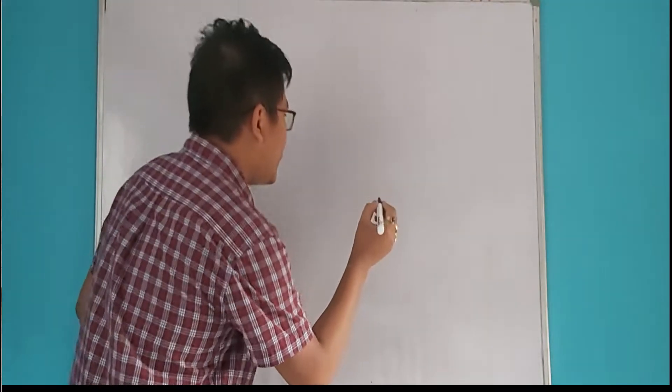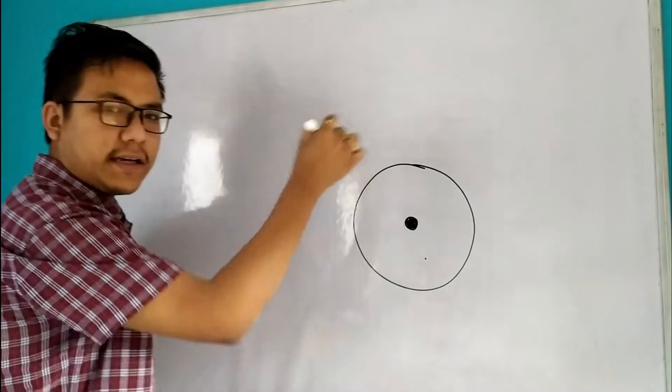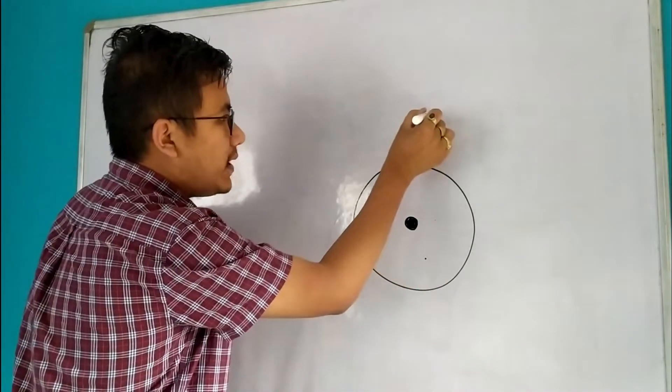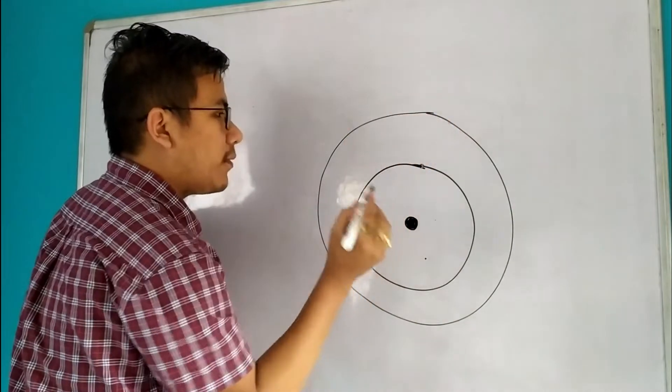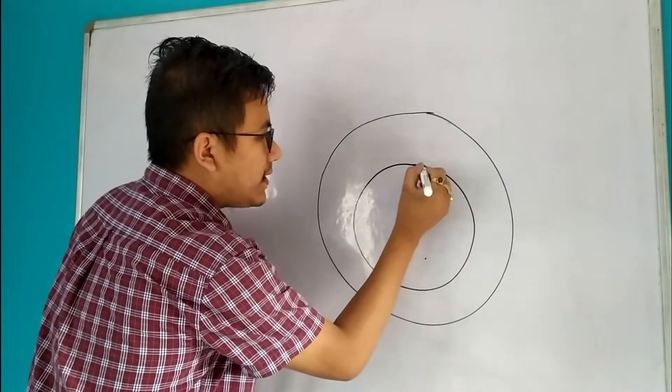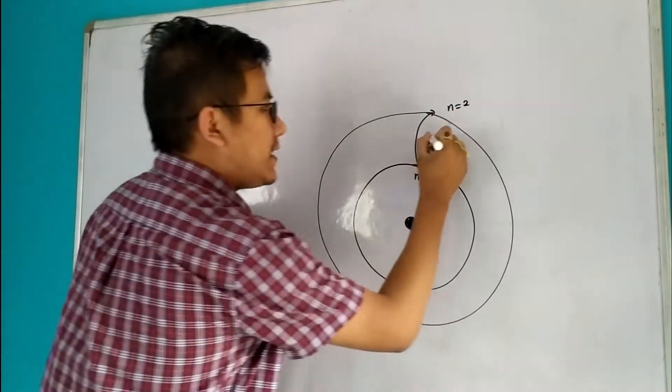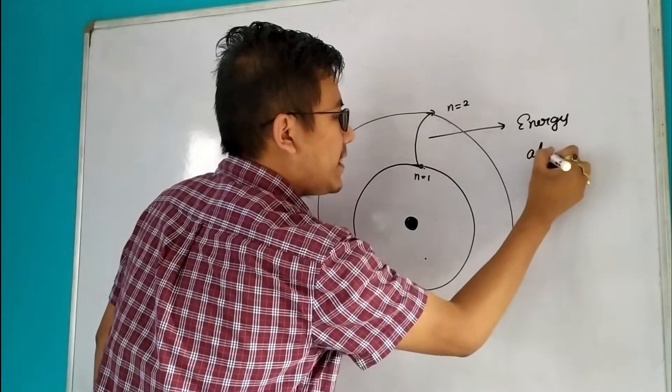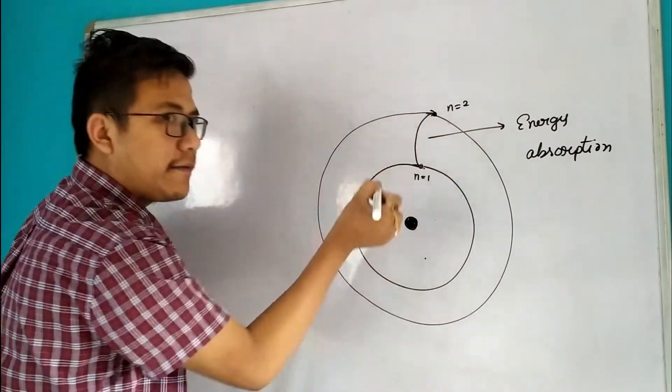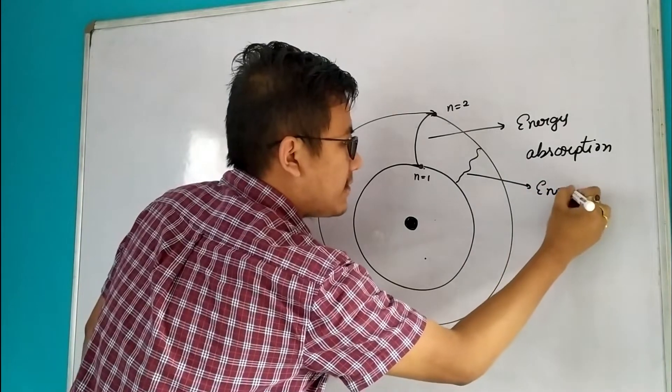So let's consider an atom. Being a hydrogen atom, the electron has revolution in the first orbit, second orbit, and so on. When the electron moves from one orbit to another, it requires some energy. This is energy absorption. Then, if you look at the electron falling back, you can see the energy emission.